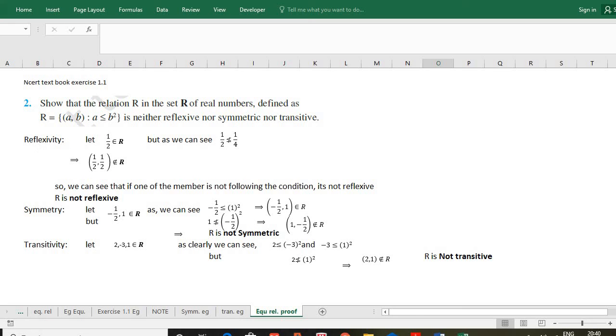To check the reflexivity, we will take one member of the real numbers. For this I have taken 1/2. 1/2 is a rational number which is a real number as well. We can see 1/2 is definitely not less than or equal to (1/2)² which is 1/4. We can see 1/2 is greater than 1/4. So in this case, 1/2 is not related with 1/2. It means we found at least one member in the set of real numbers which is not related to itself.